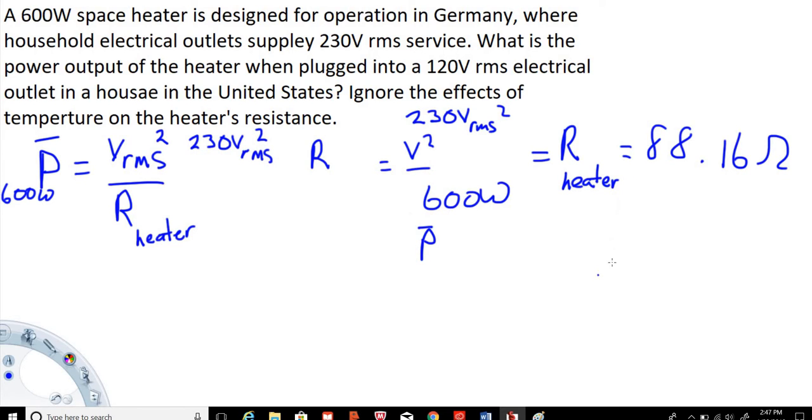That's pretty high resistance. This is the resistance of the heater, so that's not going to change when the device is moved over to the United States. And the question is asking, what is the power output of the heater when it's plugged in